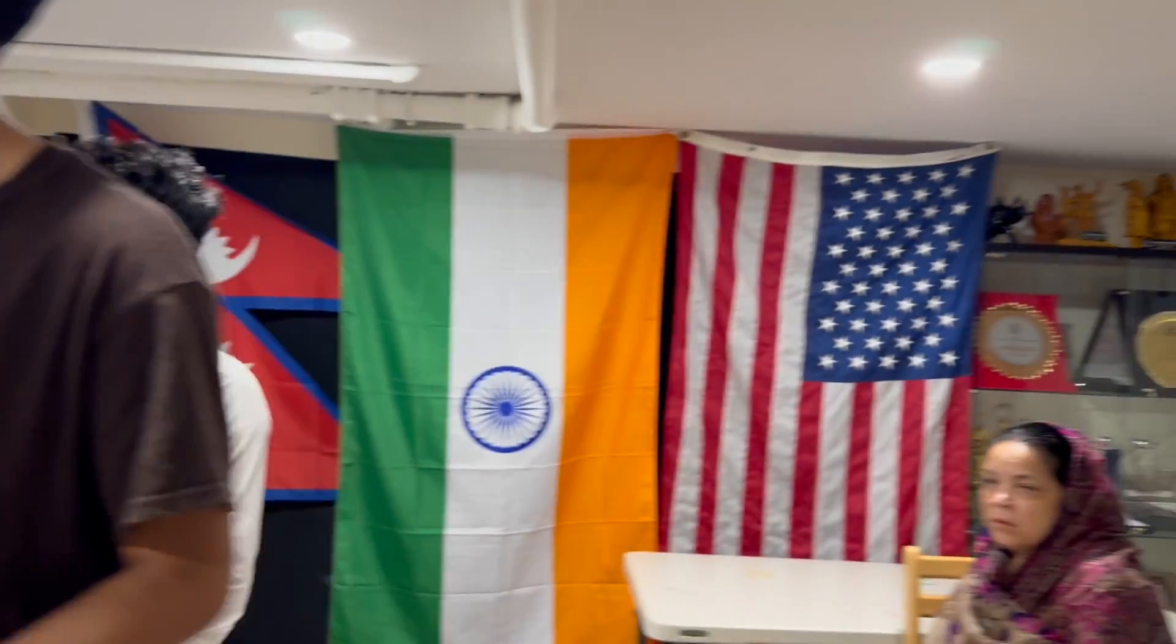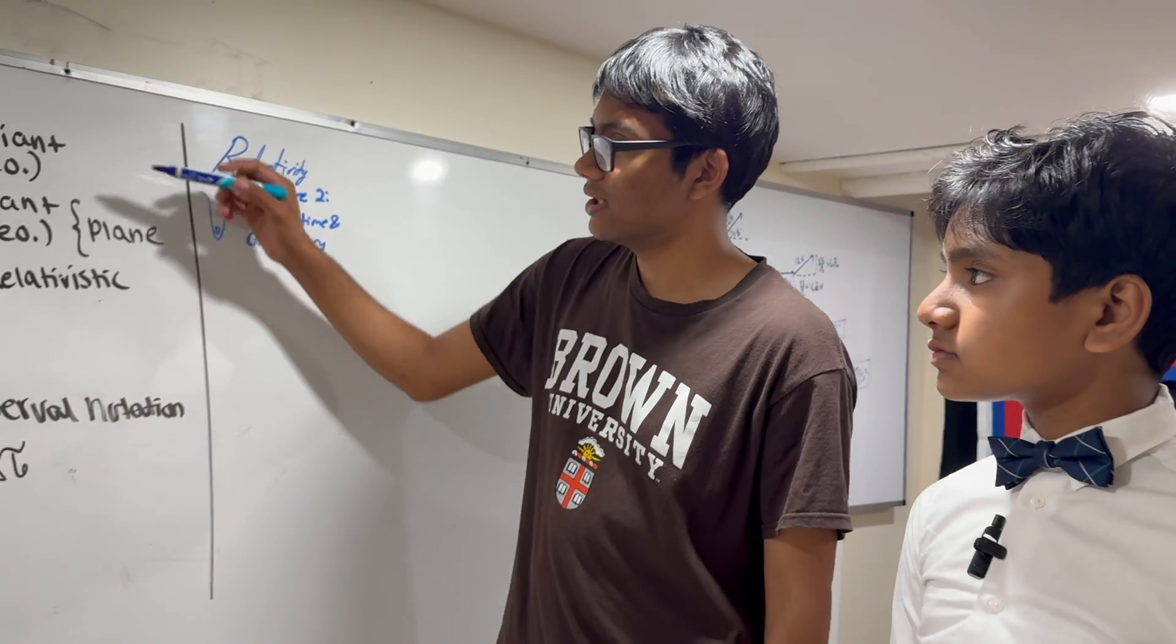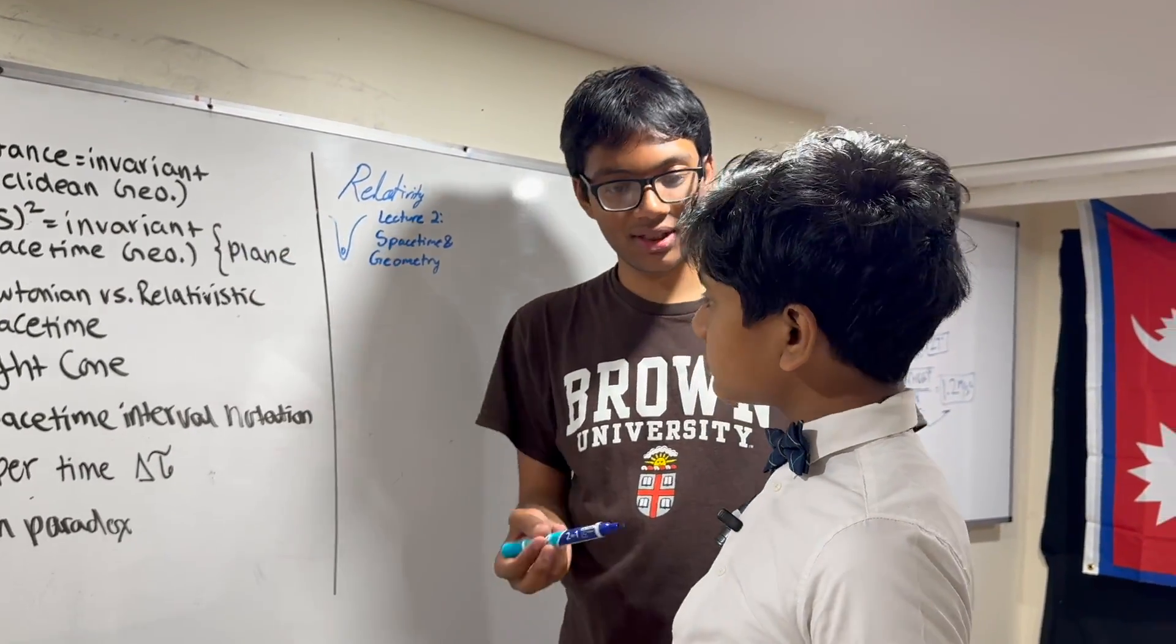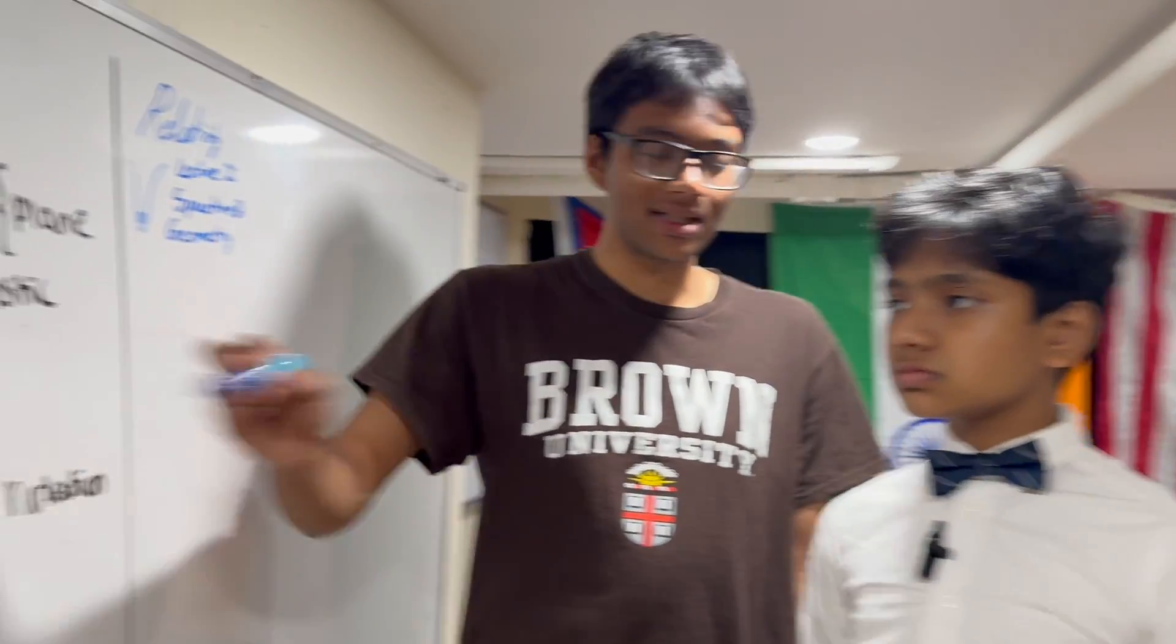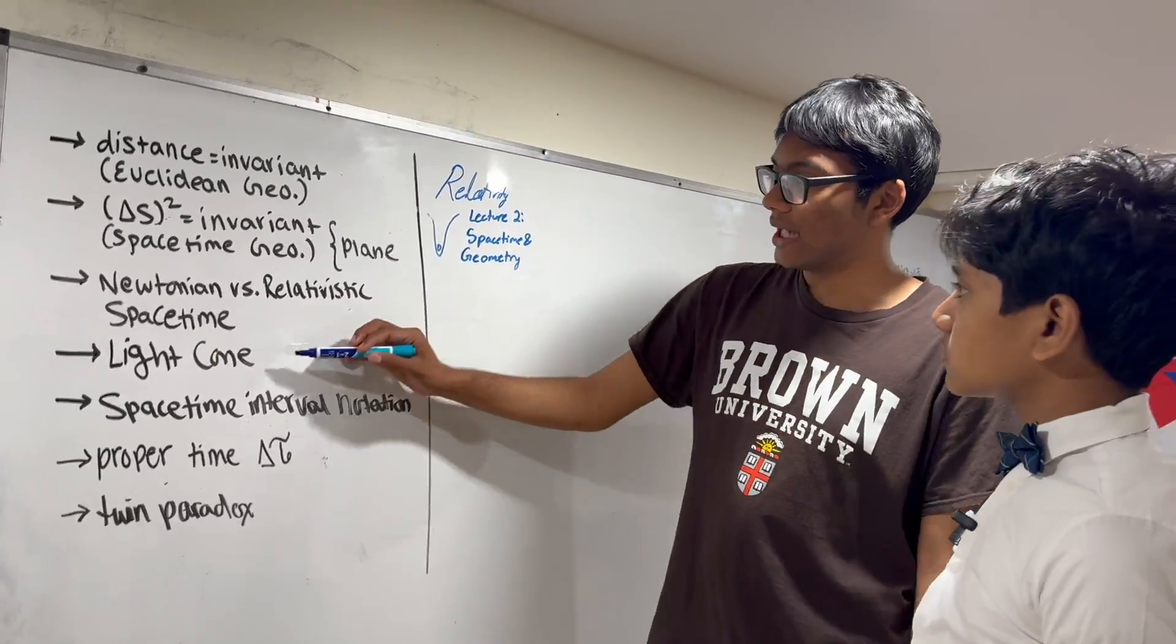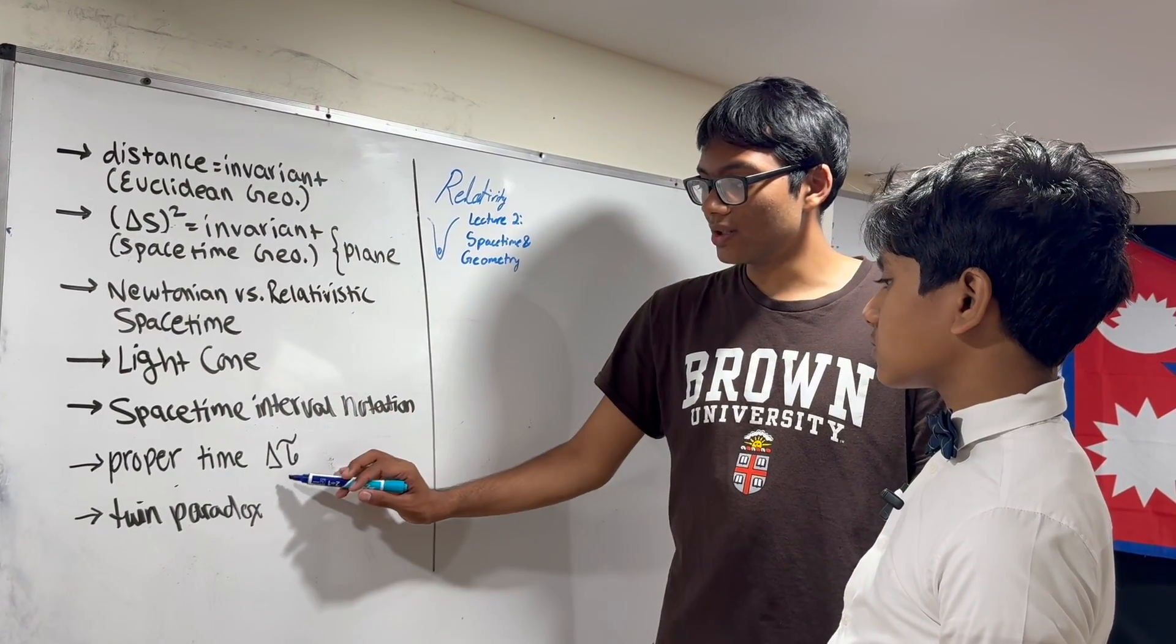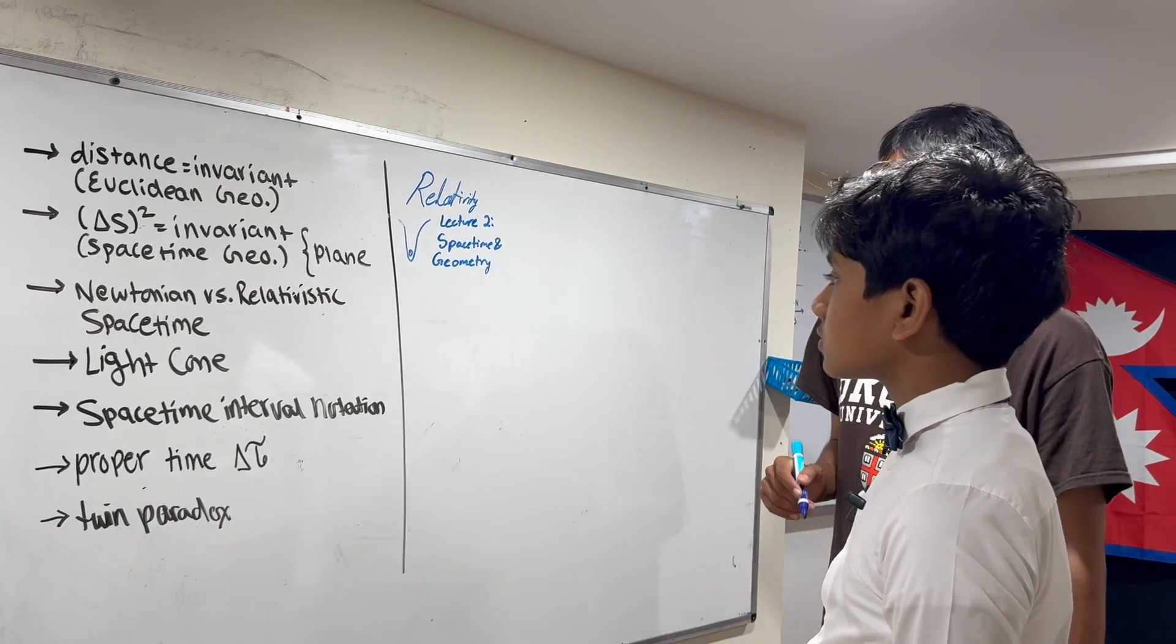So today we're going to go step by step through this table of contents. We're going to talk about how distance is invariant in Euclidean geometry, but how the space-time interval is invariant in space-time geometry. Then we'll use that to compare Newtonian relativistic space-time, and we'll talk about the light cone, notation for the space-time interval, the proper time, and the twin paradox briefly.